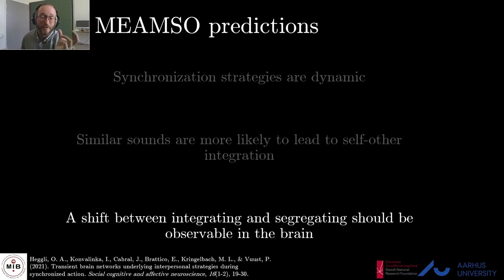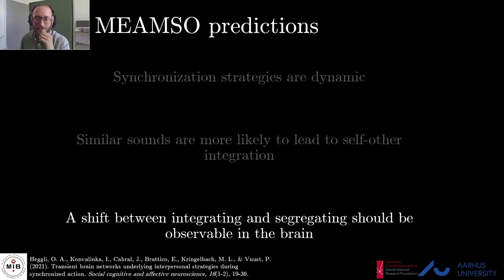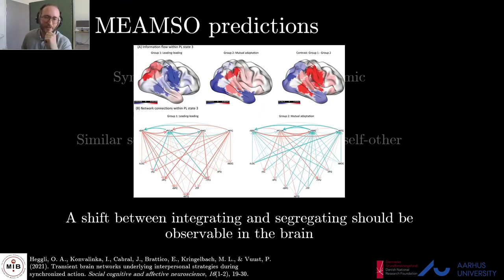Third, a shift between integrating and segregating should be observable in the brain. I had hoped to have this done by now, but experiments were put on hold and there is now a long queue for the MEG system — hopefully later this year. We do have some EEG data, out in SCAN now, pointing towards a network of interest crucially covering regions such as the right temporoparietal junction and the precuneus.